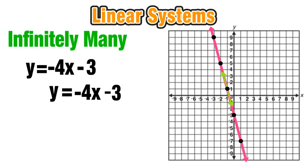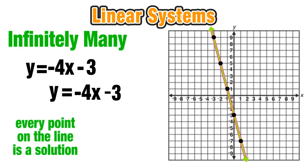Notice that both equations are exactly the same. They are identical. So if I graph the second one, it's going to be right on top of the first one. So every single point is going to be a solution. And since lines have an infinite number of points, this linear system has an infinite number of possible solutions.